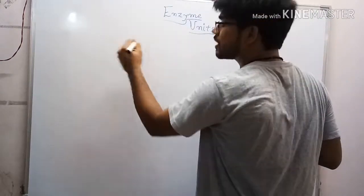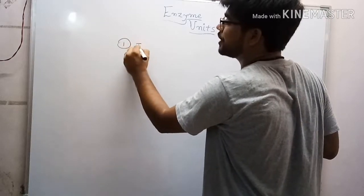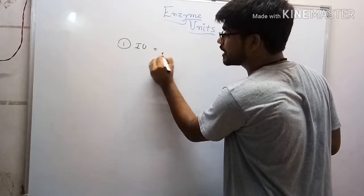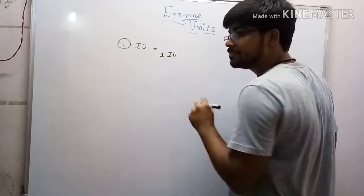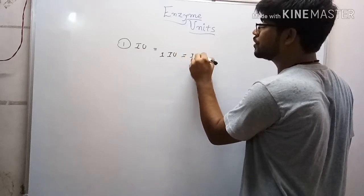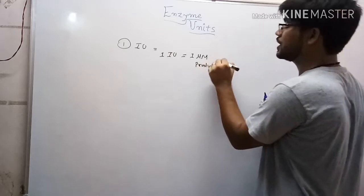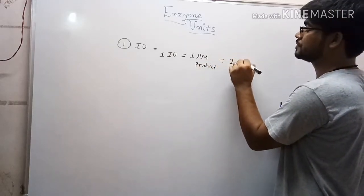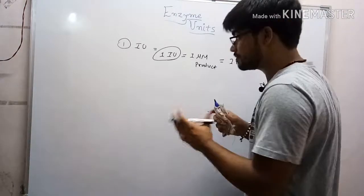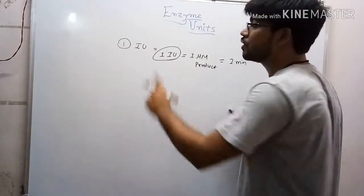There are many types of units. First is IU, or international unit. One international unit means the amount of enzyme that catalyzes one micromole of product in one minute. This is called one IU unit or one international enzyme unit.